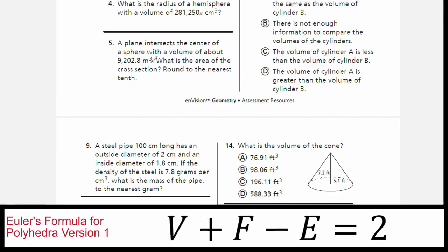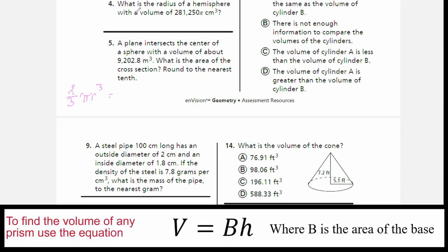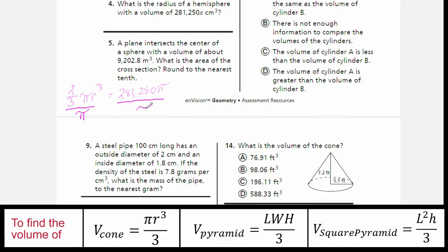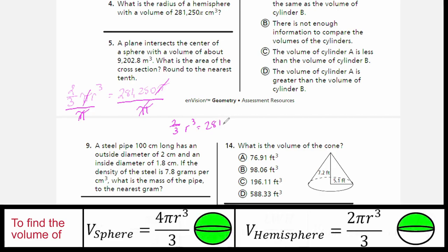We want to solve for the radius. The first thing I want to do is get rid of the irrational number — always do that first. Dividing both sides by pi leaves us with two-thirds r cubed equals 281,250.